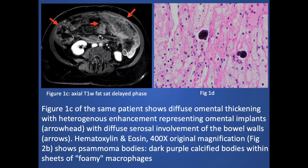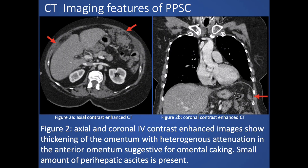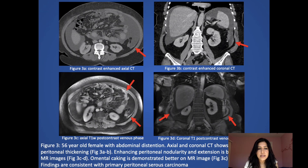Psammoma bodies are dark, purple, calcified bodies with sheets of foamy macrophages. This case shows the CT imaging features of primary peritoneal carcinoma. There is thickening of the omentum with heterogeneous attenuation in the anterior omentum, suggestive of omental caking.